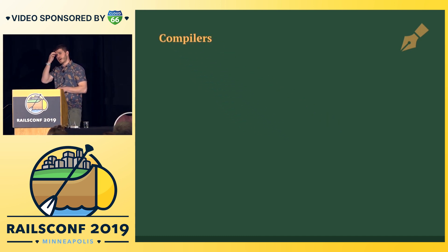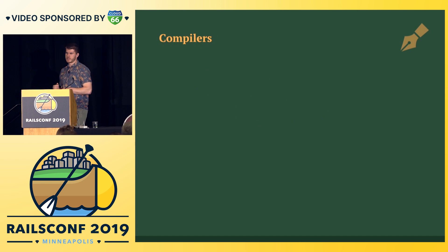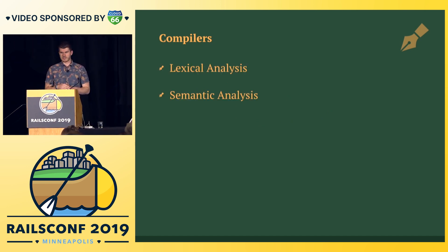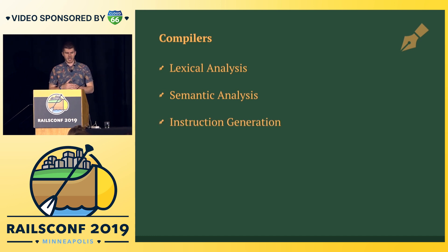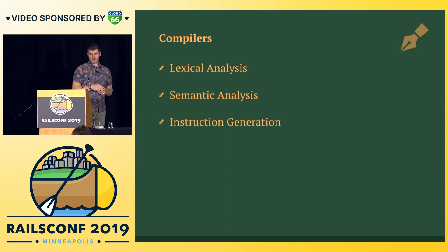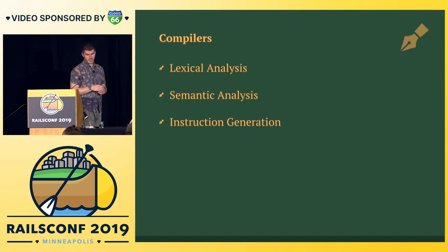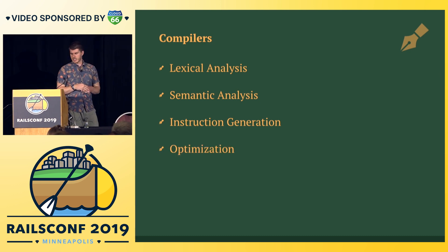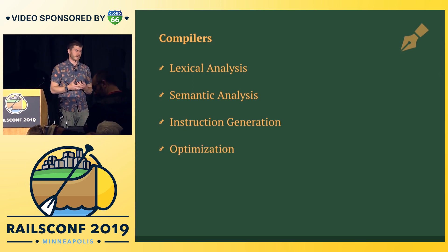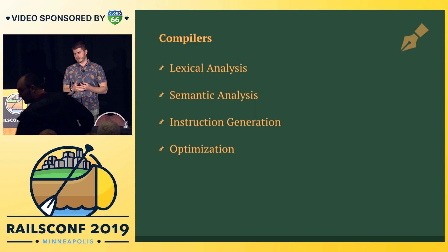When we talk about compilers, we typically talk about a couple of steps: first there's lexical analysis, then semantic analysis, then instruction generation for the virtual machine — which was new starting in Ruby 1.9 — various optimization passes, and we're going to talk a lot about that.